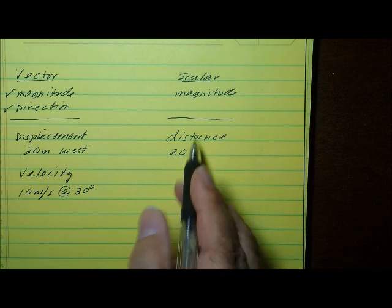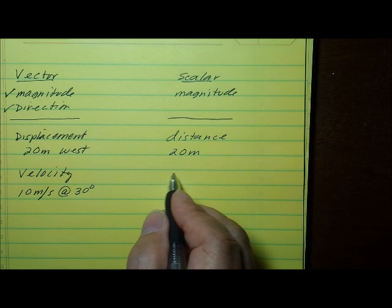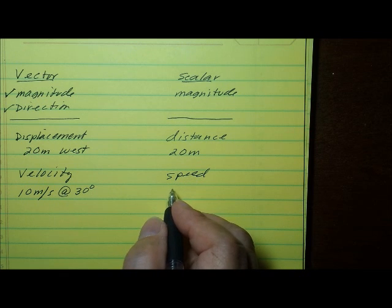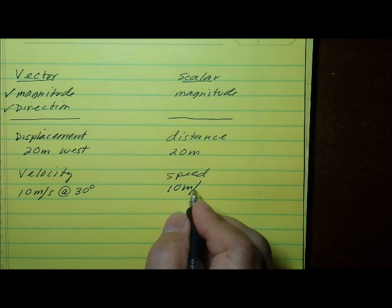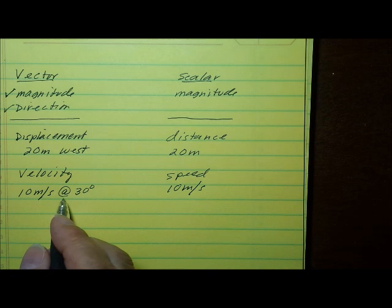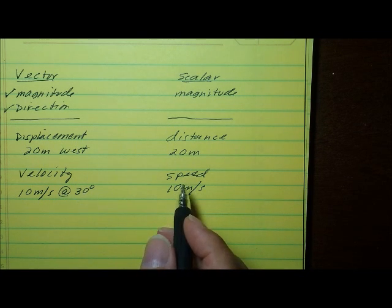So if you look at this in terms of scalar measurements, speed is a scalar measurement because speed has a quantity or magnitude but it doesn't have a direction. 10 meters per second is a speed where 10 meters per second at 30 degrees is a velocity.